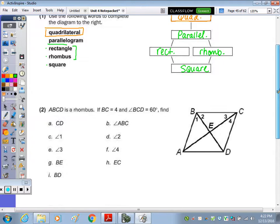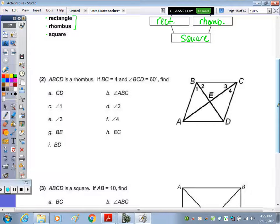In number two, I'm focusing on the rhombus. As I mark my givens, I'm going to mark the whole picture based on that. So if BC is four, CD is also four, AD is also four, and AB is also four, because the sides of a rhombus are congruent.